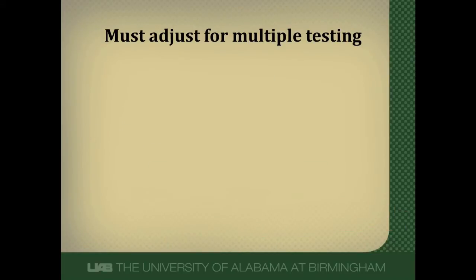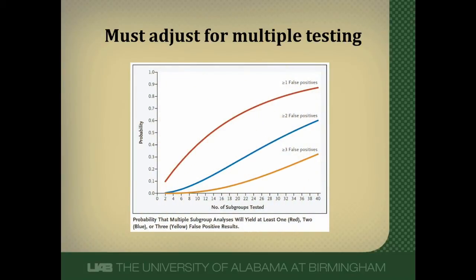We must adjust for multiple testing — multiple divisions of the data and reanalyzing, running statistical tests. This figure plots the probability of a false positive finding based on the number of subgroups tested — basically the number of statistical tests. The CHARISMA trial had 20 different subgroups. If you look for at least one false positive, there's about a 60% chance that, in doing 20 subgroup analyses, one of them will be falsely positive.